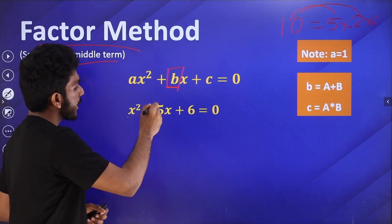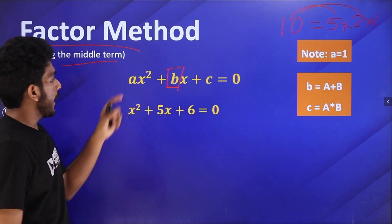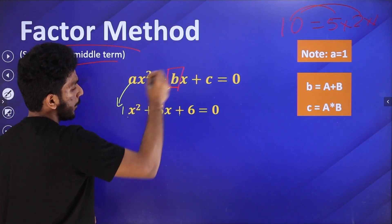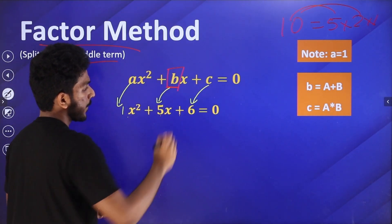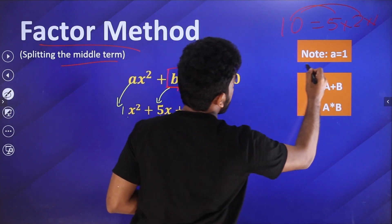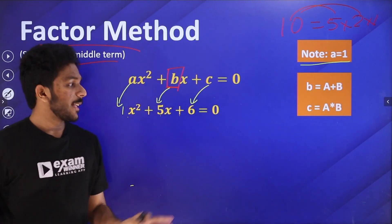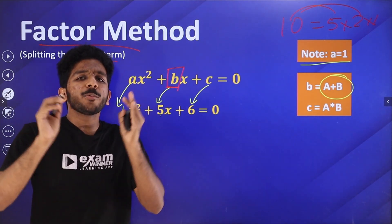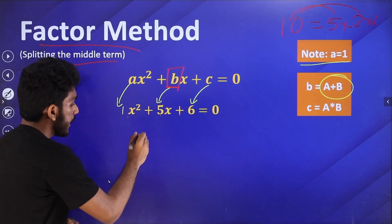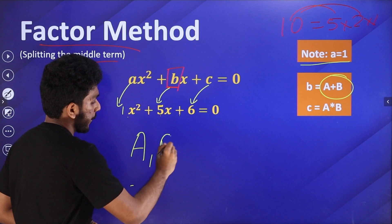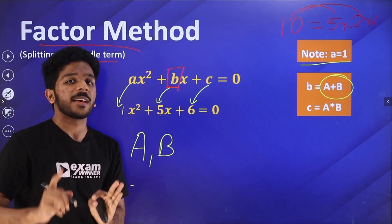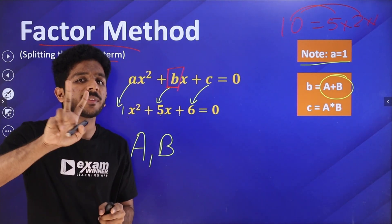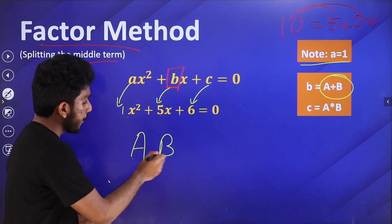We have x squared plus 5x plus 6 equal to 0. Here, a is 1, b is the middle term coefficient 5, and c is 6. We will split this b into two values A and B.